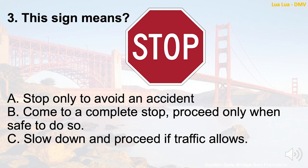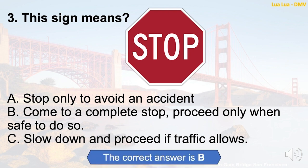Question 3: This sign means — A. Stop only to avoid an accident. B. Come to a complete stop, proceed only when safe to do so. C. Slow down and proceed if traffic allows. The correct answer is B: Come to a complete stop, proceed only when safe to do so.